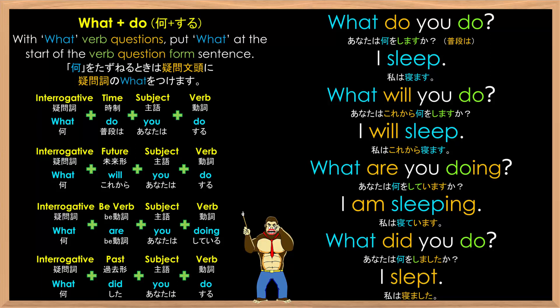If you look closely, you'll notice that all the forms of the sentence are the question form with 'what' at the beginning. So: 'What do you do,' 'What will you do,' 'What are you doing,' 'What did you do.' If you take the 'what' away, it just becomes a normal question: 'Do you do,' 'Will you do,' 'Are you doing,' 'Did you do.'